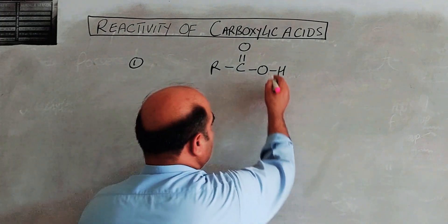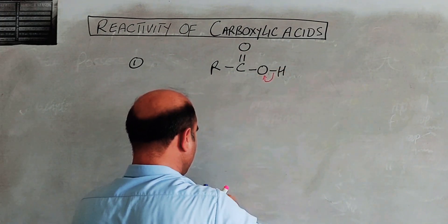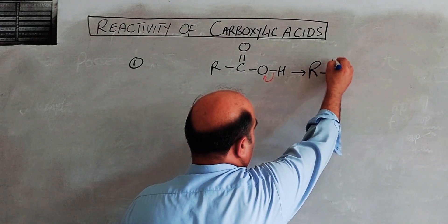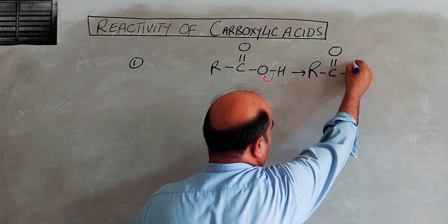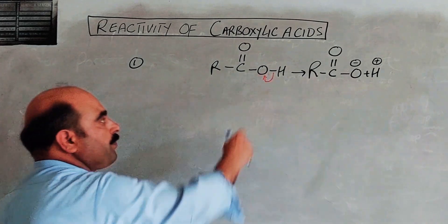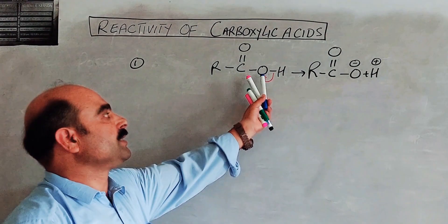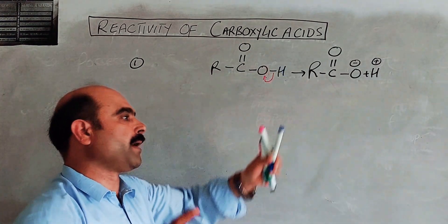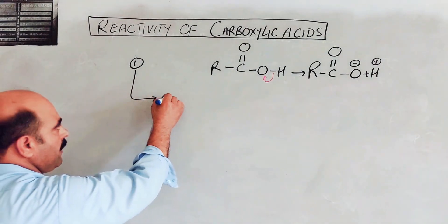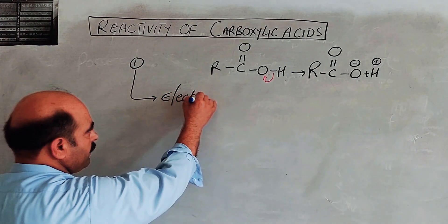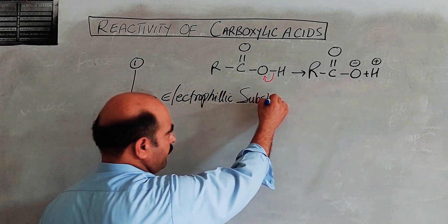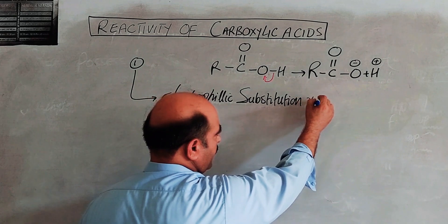The O-H bond breaks, releasing hydrogen in the form of a hydrogen ion. The carboxyl group R-C(=O)-O carries a negative charge after loss of the hydrogen ion. This is the change in the O-H bond, where hydrogen is released in the form of a hydrogen ion — a reaction due to the O-H group.